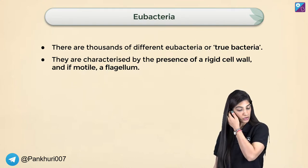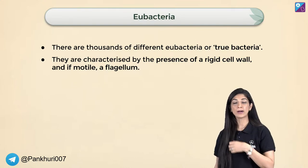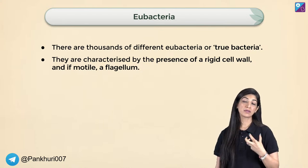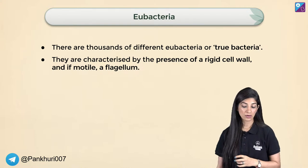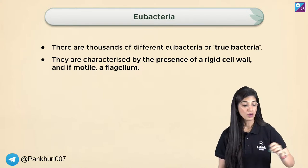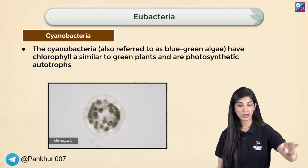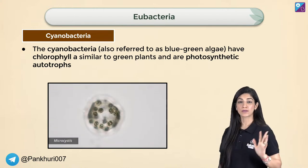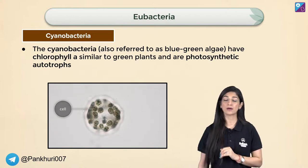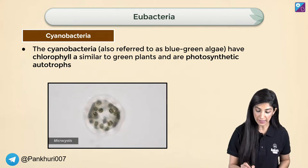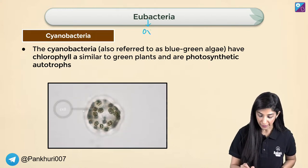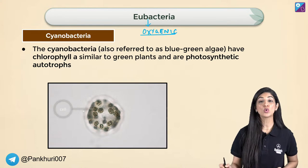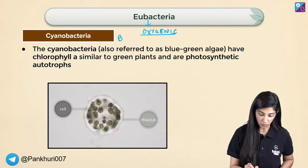Now we come to Eubacteria — true bacteria — which are present in millions and millions. We have already talked about their structure: the cell wall, cell membrane, everything. Among Eubacteria, the first group is called oxygenic Eubacteria.